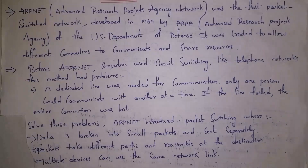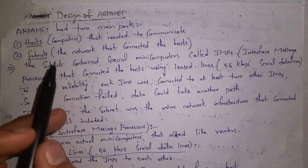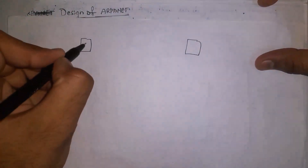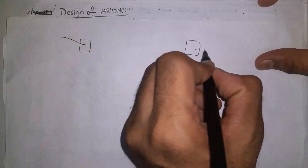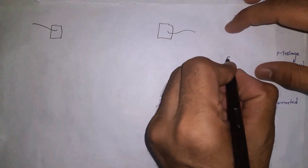For example, if you consider a 4G network, all members use the same network connection. Next I will explain the design of ARPANET, also called ARPANET architecture. ARPANET architecture contains two parts: hosts and subnets. Hosts are the computers that need to communicate. For example, my computer and my friend's computer both act as hosts. A host is a computer which will send information and which will receive information.